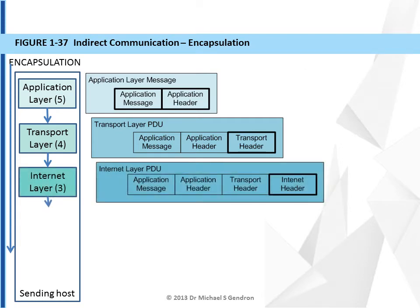The transport layer PDU is then sent to the internet layer. The internet layer takes the transport layer PDU and puts that message into its payload and appends an internet header. The internet header will have protocol identifiers for the internet layer and IP addresses for the sending and receiving host.